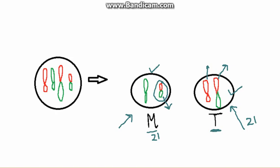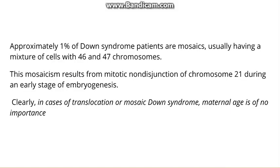Now we will understand about the third part, that was mosaics. Now the 1% of Down syndrome patients are mosaics, means they have a mixture of cells. Some cells of these patients have 46 chromosomes and some have 47 chromosomes, and this mosaicism is due to mitotic non-disjunction of chromosome number 21.